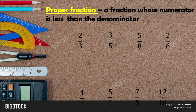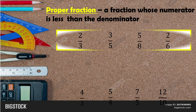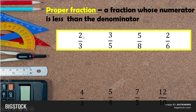So what is a proper fraction? A proper fraction is a fraction whose numerator is less than the denominator. The examples are two-thirds, three-fifths, five-eighths, two-sixths — lahat ng numerator ay mababa kesa denominator. The denominator is higher, so we call that a proper fraction.